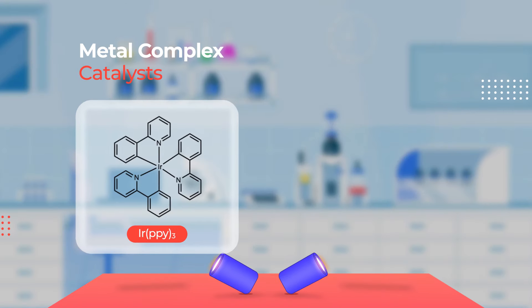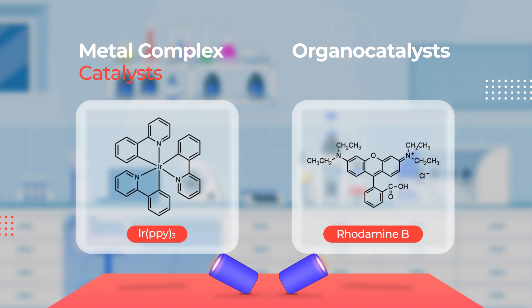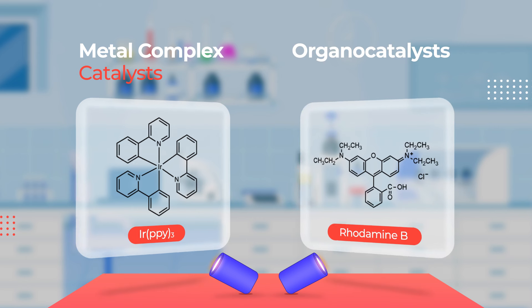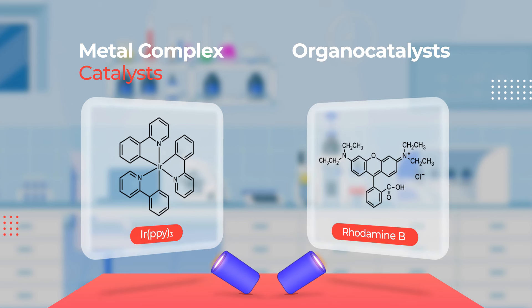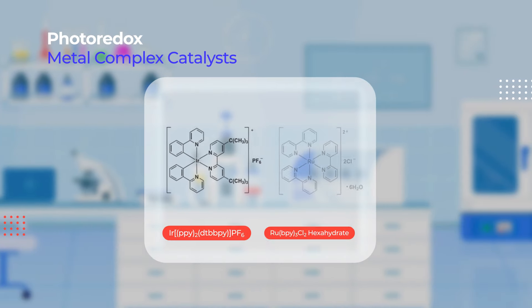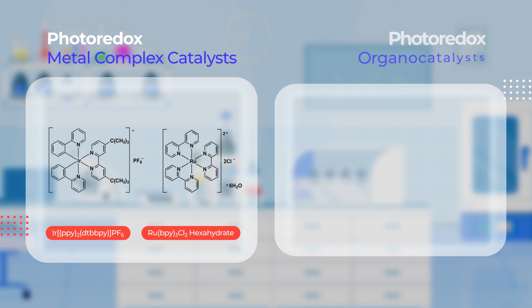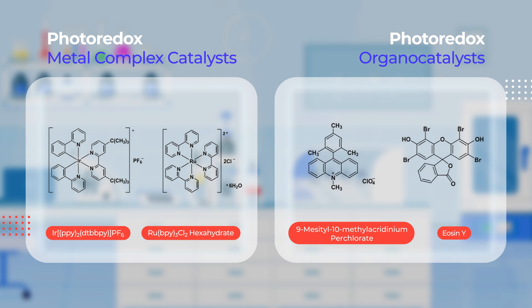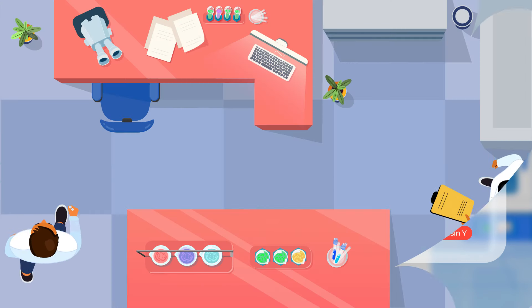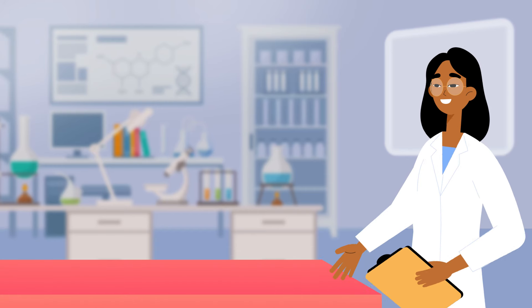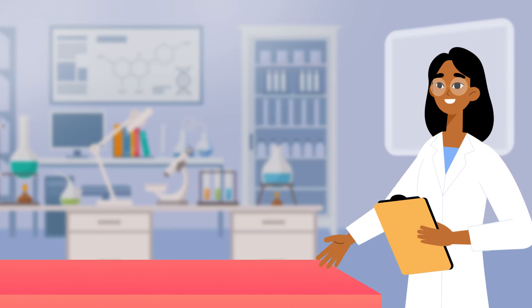Many metal complex catalysts and organocatalysts are capable of initiating radical formation in the presence of visible light. Photoredox metal complex catalysts and photoredox organocatalysts can form long-lived triplet excited states under photo irradiation.